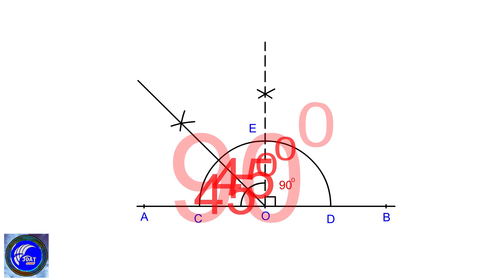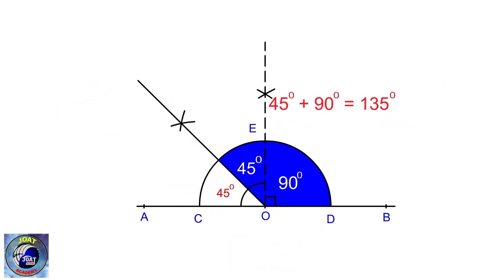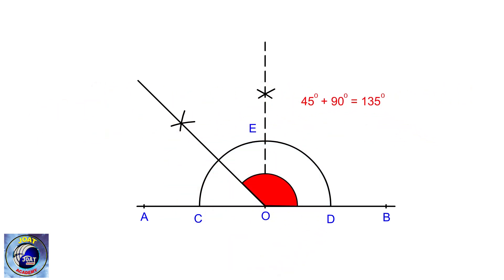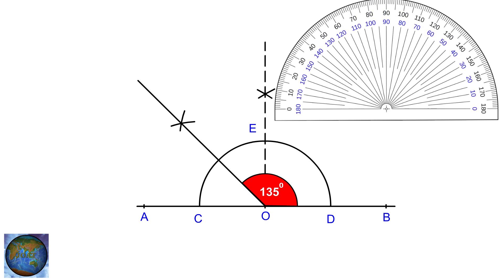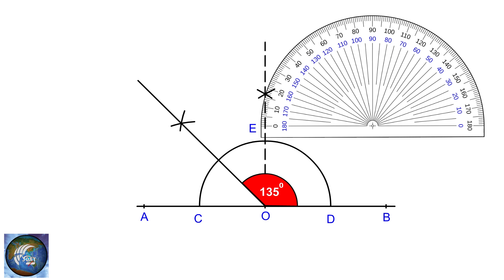Finally, combine a 45 degree angle with a 90 degree angle to obtain a 135 degree angle. This is the correct method for constructing a 135 degree angle without a protractor. You may now use a protractor to measure the angle and verify that it is indeed 135 degrees.